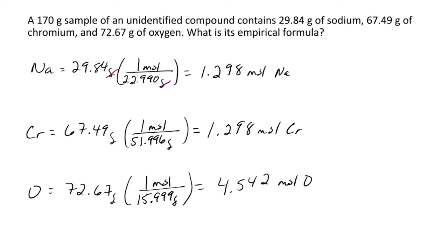The next step is to divide each element's moles by the lowest number of moles. In this case, that's 1.298, so we divide each one by 1.298.